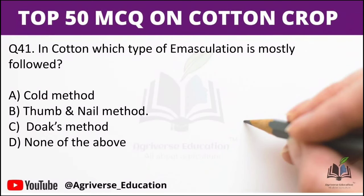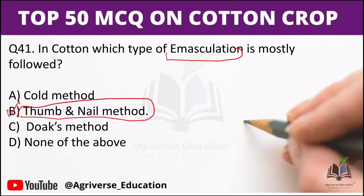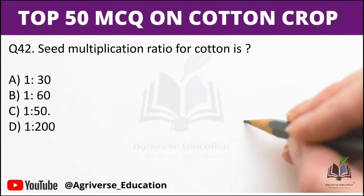Next question: In cotton, which type of emasculation is mostly followed? Options are: coal method, thumb and nail method, dogs method, or none of the above. The right answer is option B — thumb and nail method is the emasculation method used in cotton.